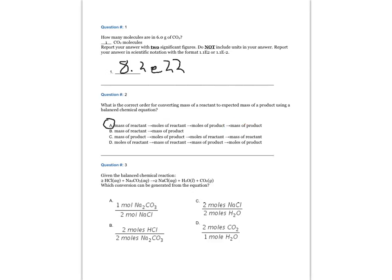Question three. Given the balanced chemical equation: two moles of HCl aqueous plus one mole of Na2CO3 aqueous yield two moles of sodium chloride aqueous plus one mole of water plus one mole of carbon dioxide gas — which conversion can be generated from the equation? The answer is A: one mole of sodium carbonate to two moles of sodium chloride aqueous.